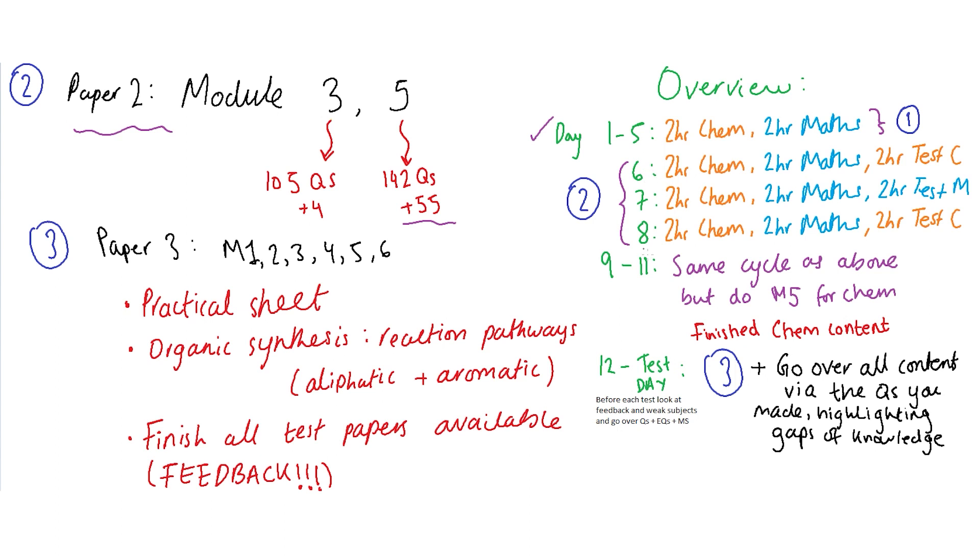And this is linked to the overview so I've already done 1 to 5. So 6, 7, 8 we focus on module 3. From 9 to 11 we do the same thing from 6 to 8. So keep it alternating from maths and chem paper. But we go over the module 5 questions instead of the module 3. So what that means is after the 11th day you would have finished all of chem content.